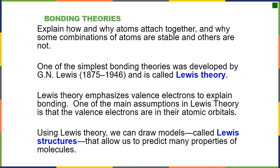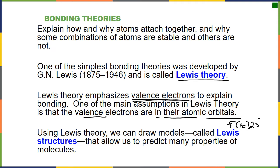We're going to start with our first bonding theory, which we're going to call Lewis theory. This is also valence bond theory. The simple assumption we make is that we look at how the valence electrons explain bonding, and we assume that the valence electrons are in their atomic orbitals. For example, with fluorine, we have 2s2, 2p5, giving us seven valence electrons, which are the electrons available for bonding.